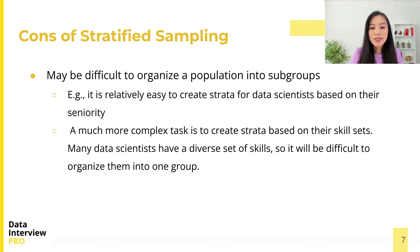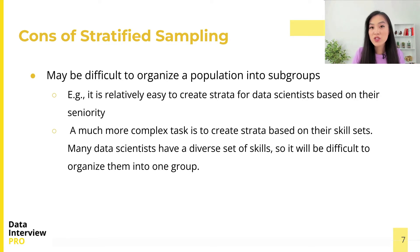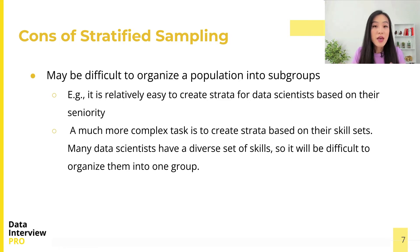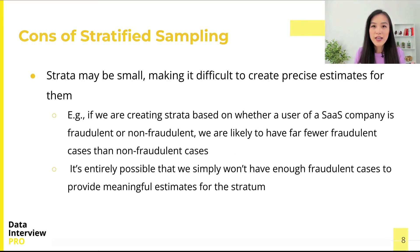There are also a few drawbacks of stratified sampling. First, it can be difficult to organize a population into groups, particularly if members fall into multiple groups. For instance, it is relatively easy to create strata for data scientists based on their seniority, but it is a much more complex task to create strata based on skill sets, since many data scientists have a diverse set of skills and it will be difficult to organize them into one group.